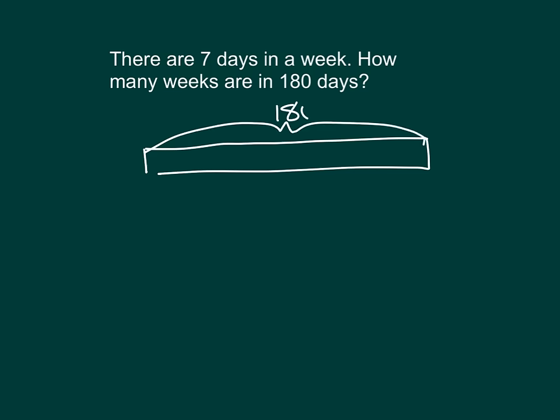We don't know how many groups we have within this. That is, we don't know how many weeks we have within this, but we know that each week is 7 days. So we have the question mark in there, not knowing how many weeks there are within 180 days.